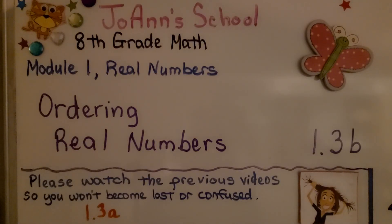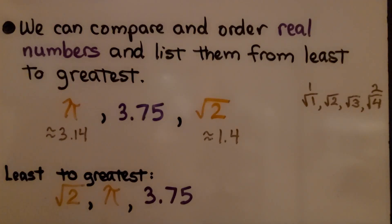Ordering real numbers, lesson 1.3b. We can compare and order real numbers and list them from least to greatest.